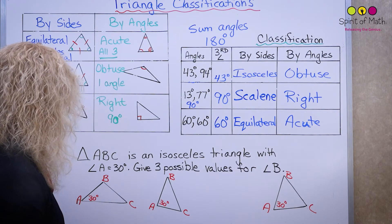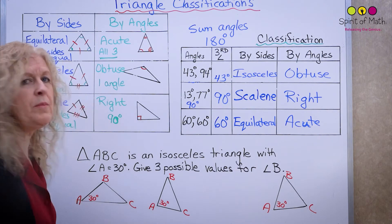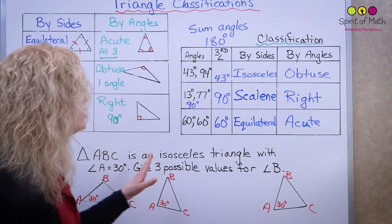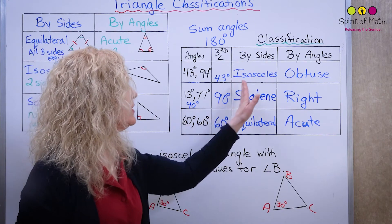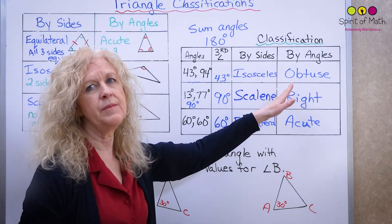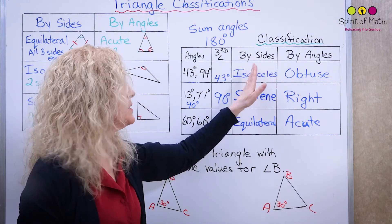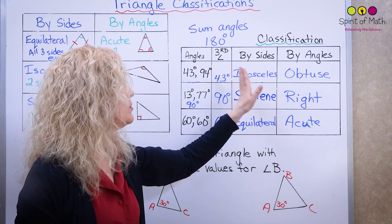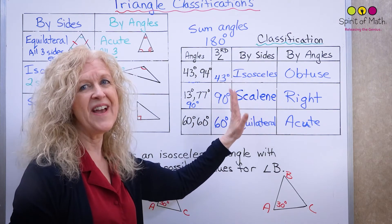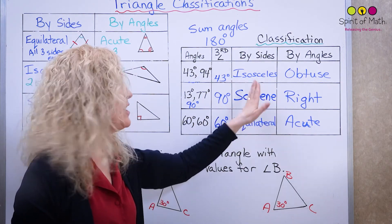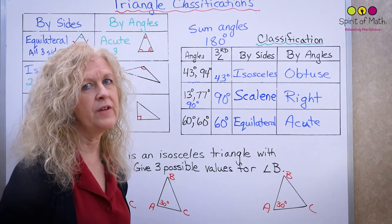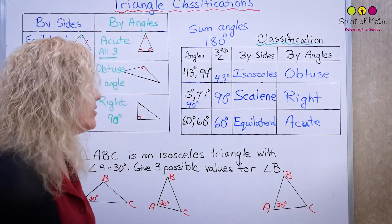Just because a triangle is isosceles doesn't mean it's obtuse — it could be an isosceles acute triangle. Always check carefully and find out what's going on, because there are all different varieties of triangles you can have.